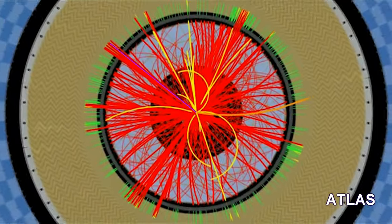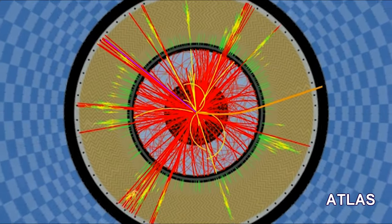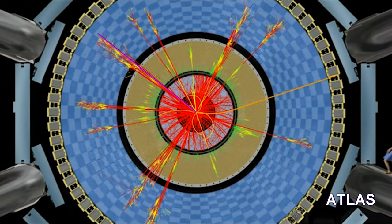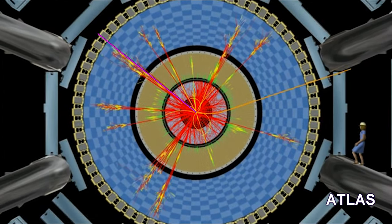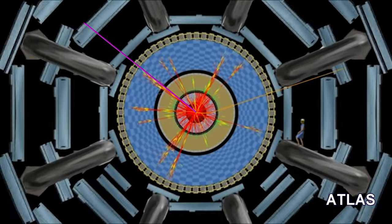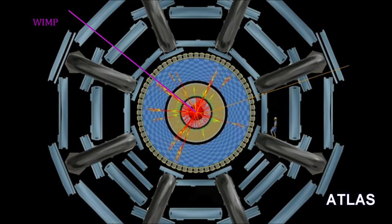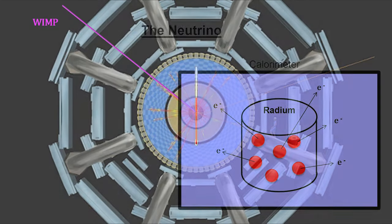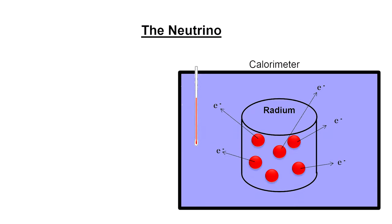Of course, the particle would not be detected because it wouldn't interact with any layer of the detector. However, it would carry away energy and momentum, so physicists could infer their existence from the amount of energy and momentum missing after a collision. You may remember from our How Small Is It elementary particle segment that this is exactly the same way Ellis and Wooster found the neutrino back in 1927.